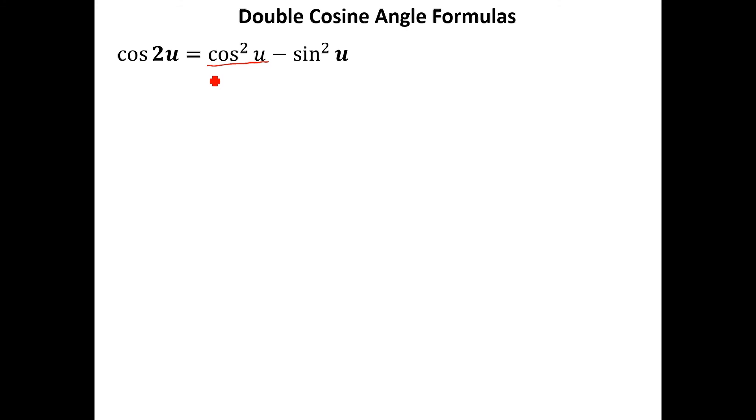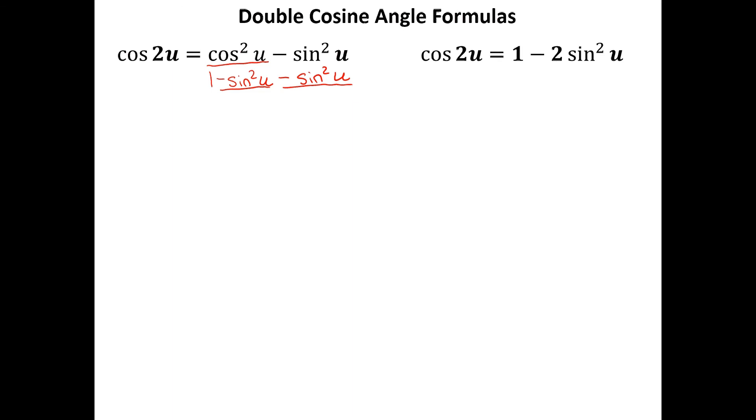The double angle cosine formula: cosine of 2U, where U is half of the angle you're given, is equal to cosine squared of U minus sine squared of U. We can simplify this further. If we replace cosine squared of U using the Pythagorean identity — cosine squared of U is 1 minus sine squared of U — and we want the cosine of 2U in only terms of sine, we combine like terms and end up with 1 minus 2 times the sine squared of U.